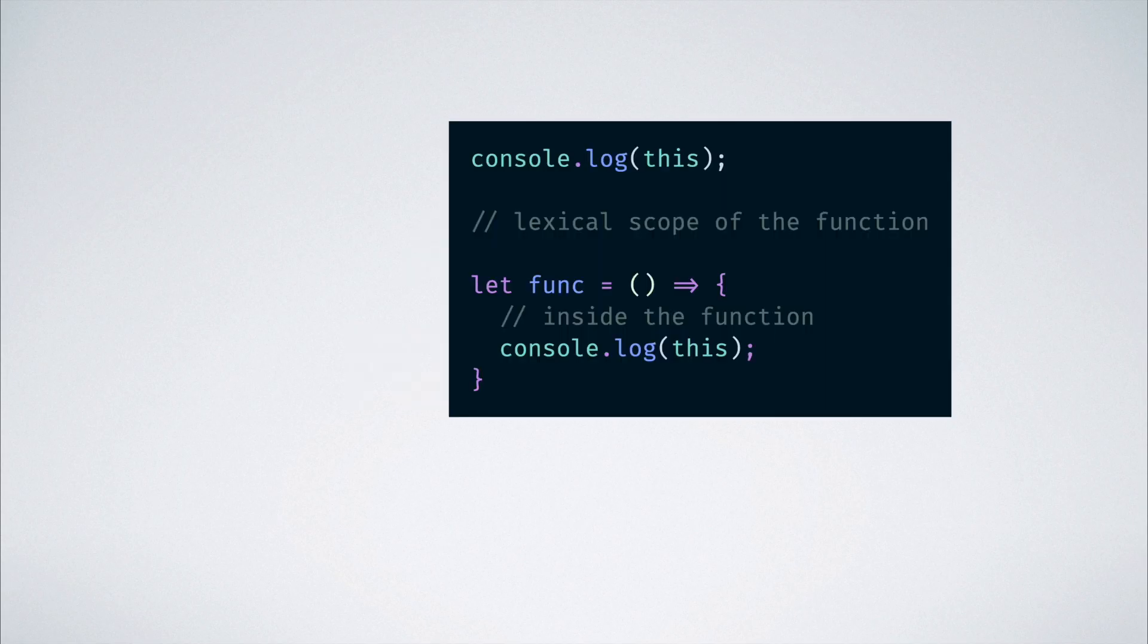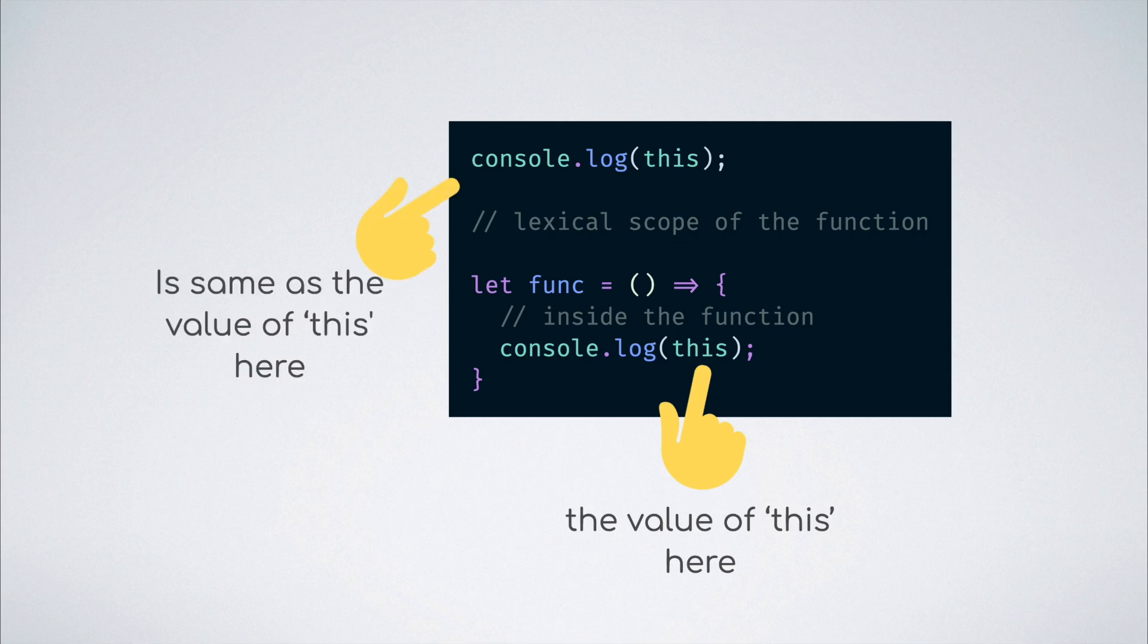And of course, no discussion about the this keyword is complete without talking about its behavior in the context of an arrow function. The deal with arrow functions is straightforward. It just retains the this value of the surrounding lexical scope in which it is placed. So whatever the value of the this property outside the function, the same is retained inside of the arrow function as well.